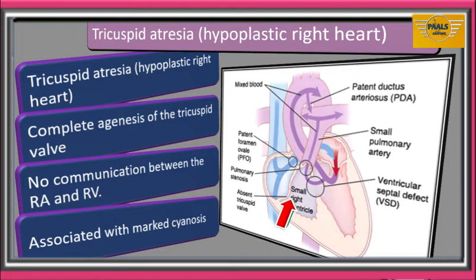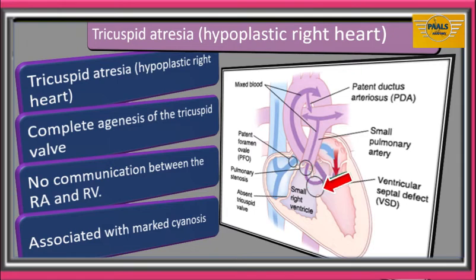Tricuspid atresia is caused by an insufficient amount of AV cushion tissue for the formation of the tricuspid valve. It is usually associated with clinically marked cyanosis and is always accompanied by patent foramen ovale, interventricular septal defects, and an overdeveloped left ventricle as compared with the underdeveloped right ventricle.